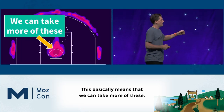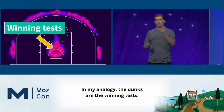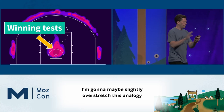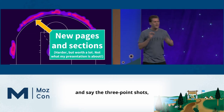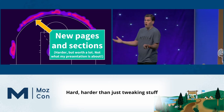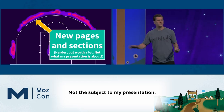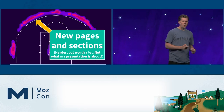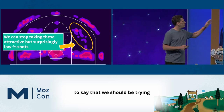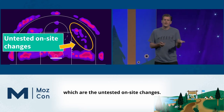Back to the basketball analogy — this basically means we can take more easy shots. In my analogy, the dunks are the winning tests: you have a winning test, very likely to perform well, you roll it out. The three-point shots are new content — new pages, new site sections. Harder than just tweaking stuff you've already got, but worth a lot. The insight here is similar to the NBA one: we should be trying to stop taking these deceptively attractive but surprisingly low-percentage shots, which are the untested on-site changes.